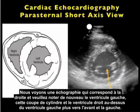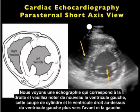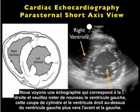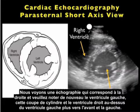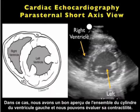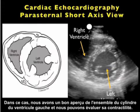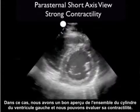The corresponding ultrasound image shows the left ventricle again as a cylinder cut in cross section, and the right ventricle above and more anteriorly to the left. In this way we get a good sense of the overall cylinder of the left ventricle and can gauge its contractility.